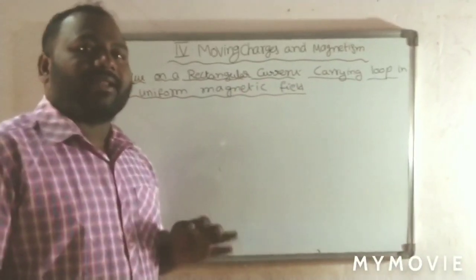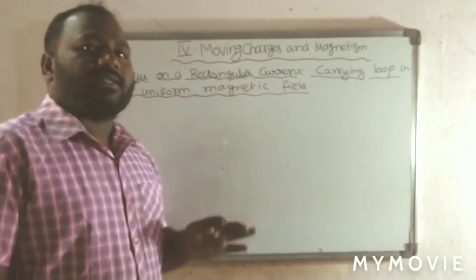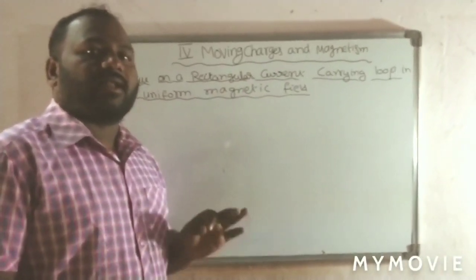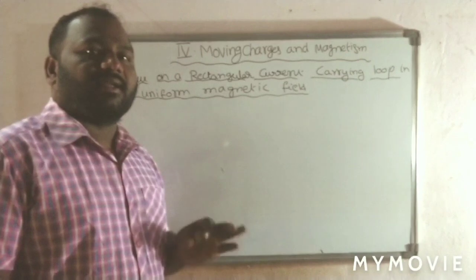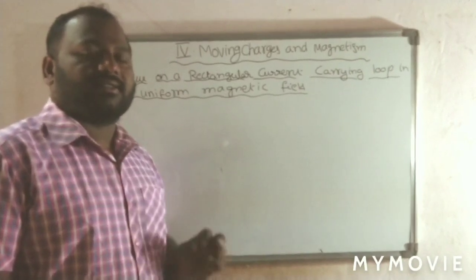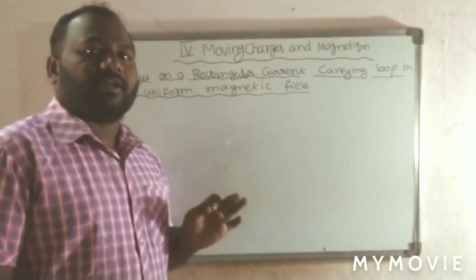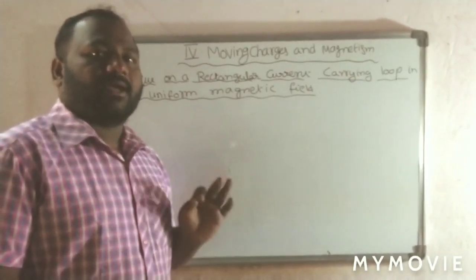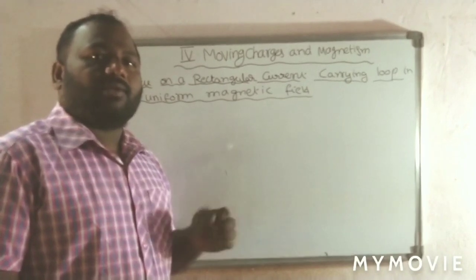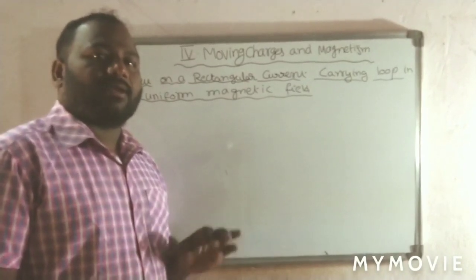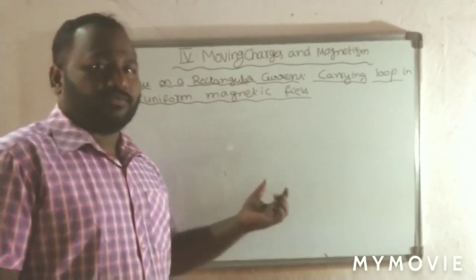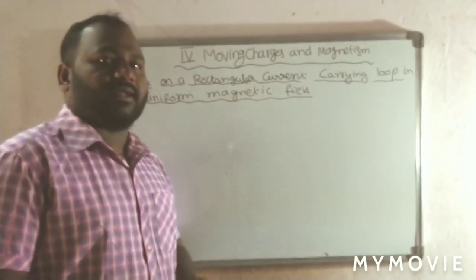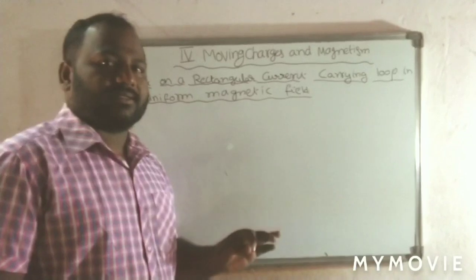In the last session, we derived what is the force between two parallel current-carrying conductors. That is the important final question. And we defined what is the ampere from the force between two parallel current-carrying conductors.